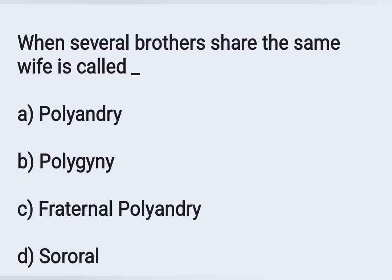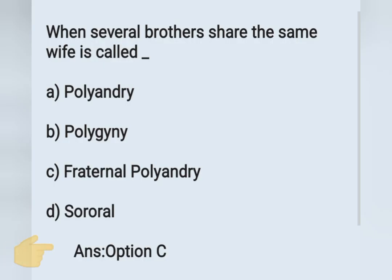The next question: when several brothers share the same wife, it is called — Options: A) Polyandry, B) Polygyny, C) Fraternal polyandry, D) Sororal. When brothers share one wife, it is called fraternal polyandry. Option C is the correct answer.